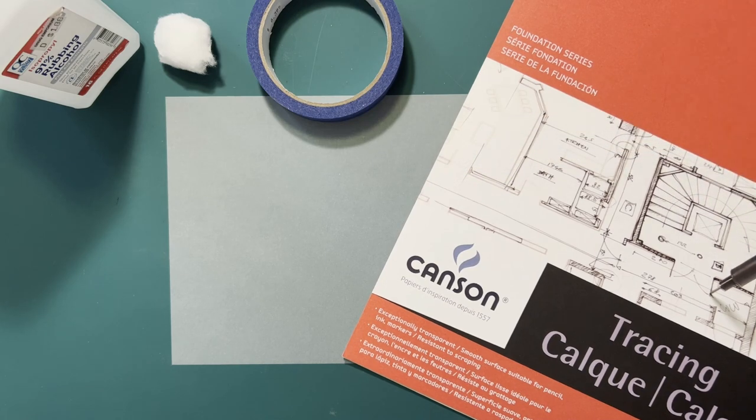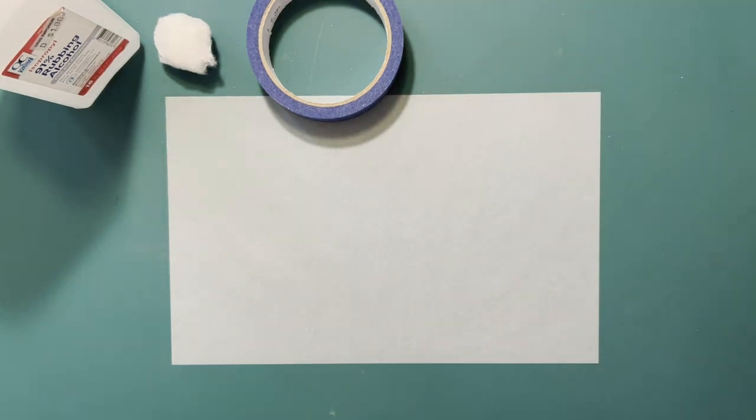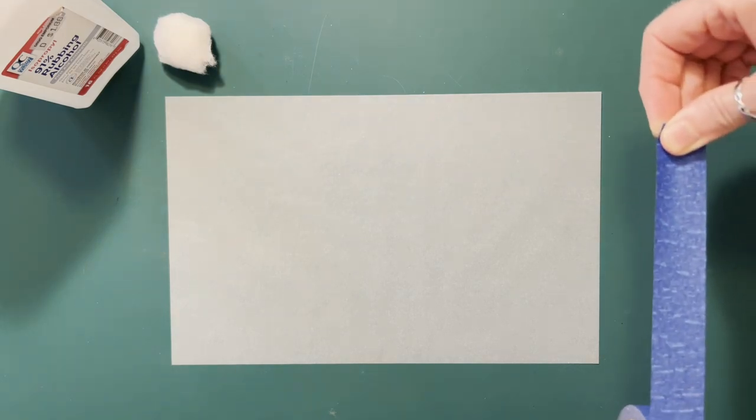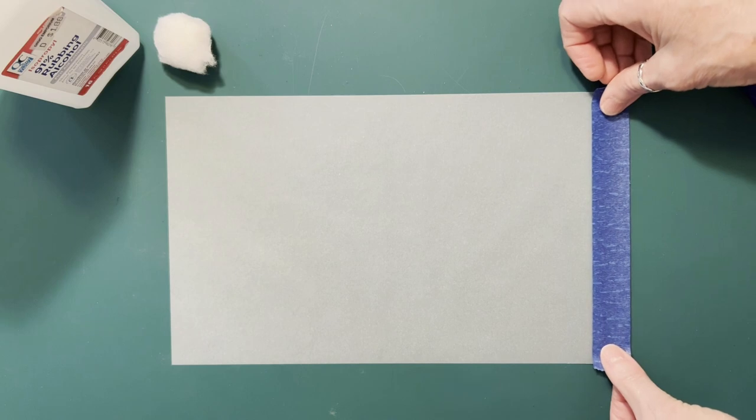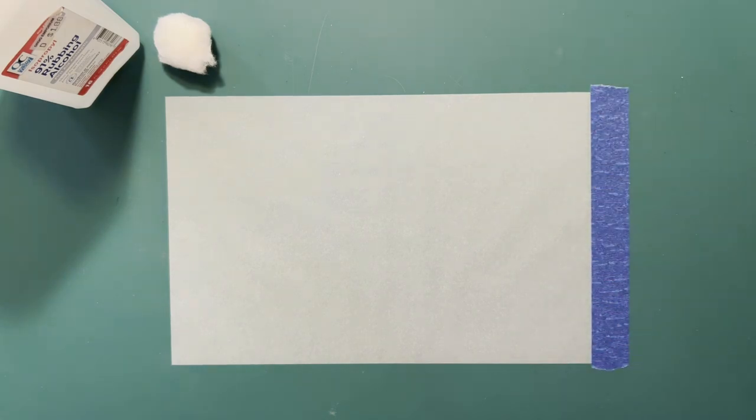When you start to make your transfer paper, take your piece and put it on a good clean smooth surface and tape it down around the edges. I like to make sure that I've taped around all four edges completely to make it nice and clean.